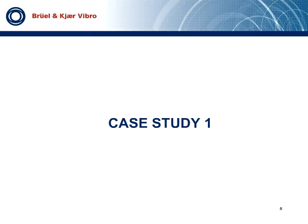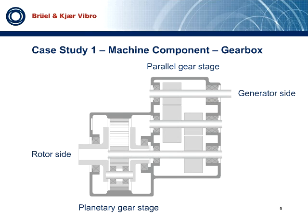Without further ado, I will hand it over to Ivalo. This three-stage gearbox configuration consists of one planetary stage and two parallel stages. It's one of the most commonly seen configurations for two-megawatt wind turbine platforms. The side coupled to the main shaft is called the rotor side, and the one coupled to the generator is called the generator side of the gearbox.